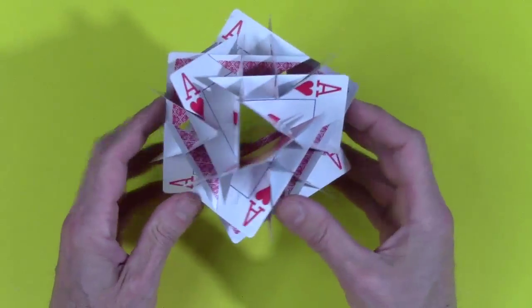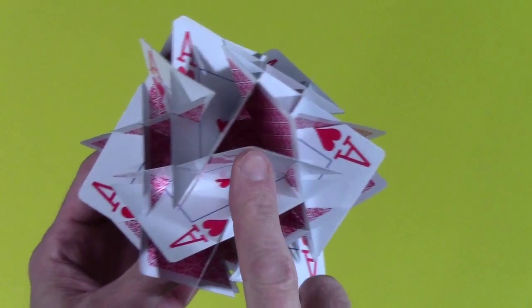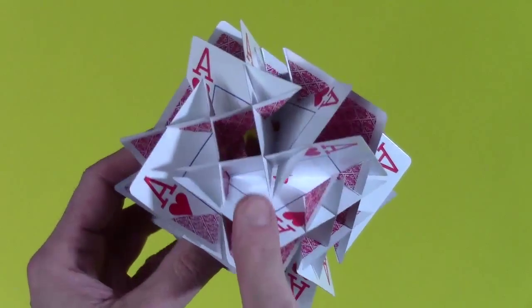To understand how 12 cards make 14 tunnels, notice that around any card there's a four-sided, three-sided, four-sided, and three-sided opening.